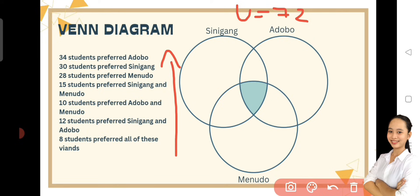At alam nyo ba na ang technique dyan sa pagsasolve ng Venn diagram ay mag-uumpisa tayo sa pinakababa, which is yung 8. Yung 8 naman, yan yung intersection nilang tatlo. Kaya isusulat natin yan sa pinakagitna nila, which is dun sa may shade.